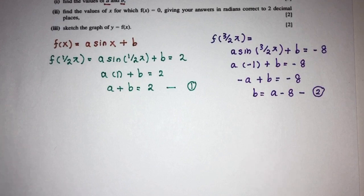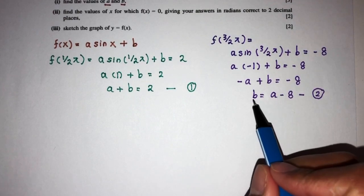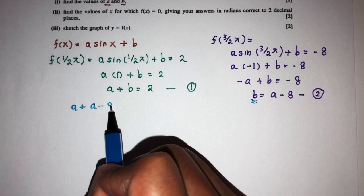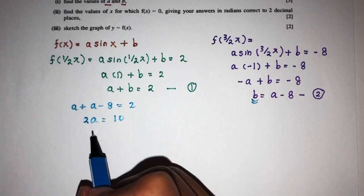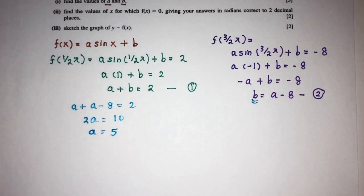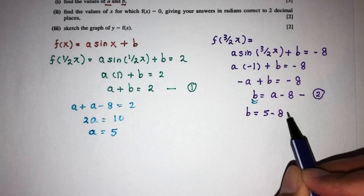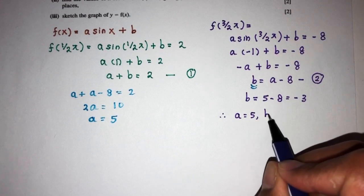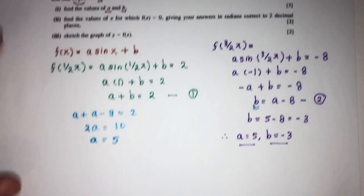We now have two equations involving two unknowns, so we use simultaneous equations. b is already the subject in equation 2, so replace b in equation 1: a plus (a minus 8) equals 2. So 2a equals 10, giving a equals 5. Replacing back: b equals 5 minus 8, so b equals minus 3. Therefore a equals 5 and b equals minus 3.